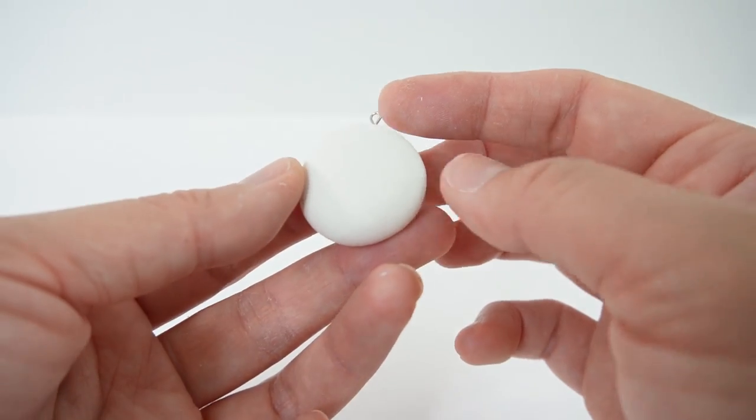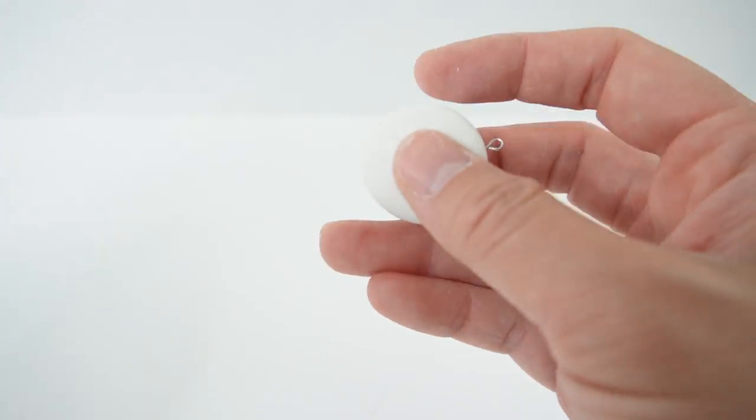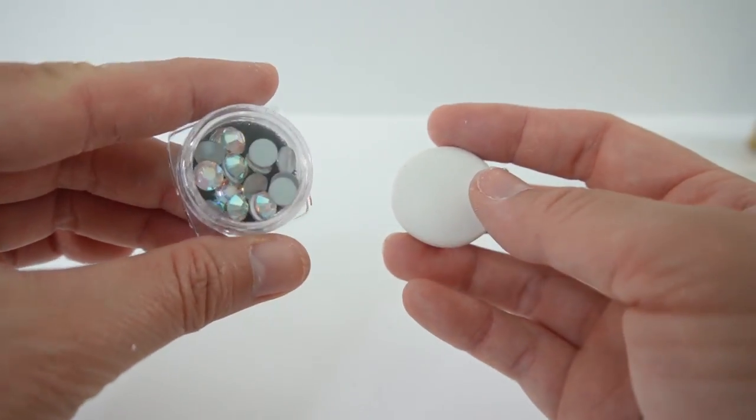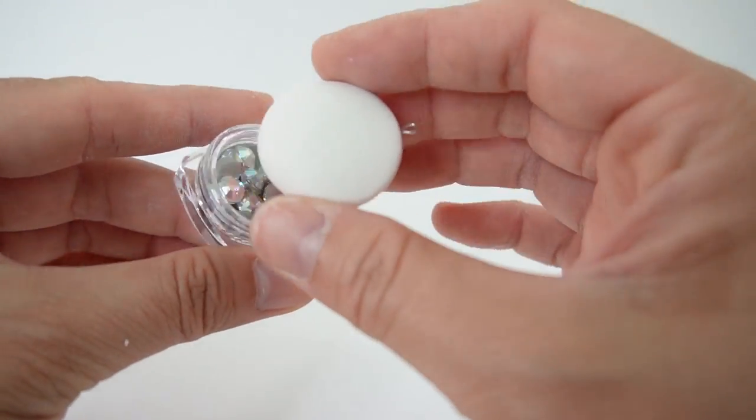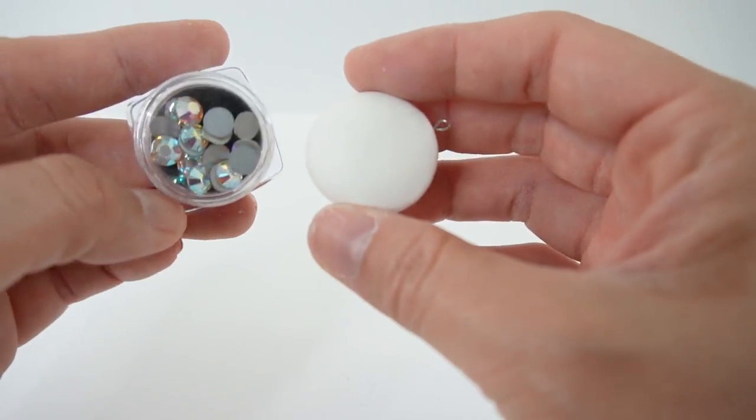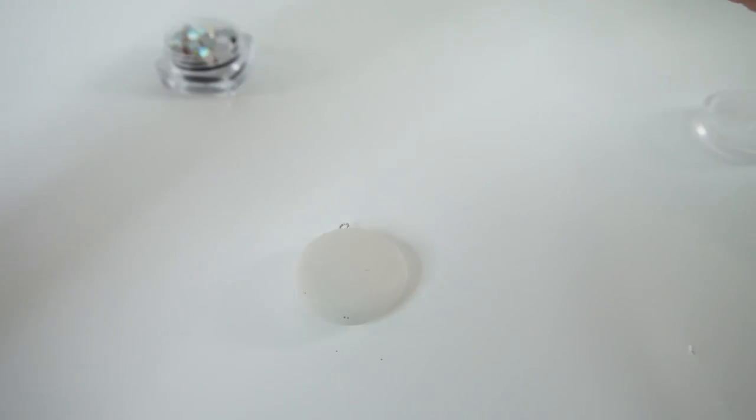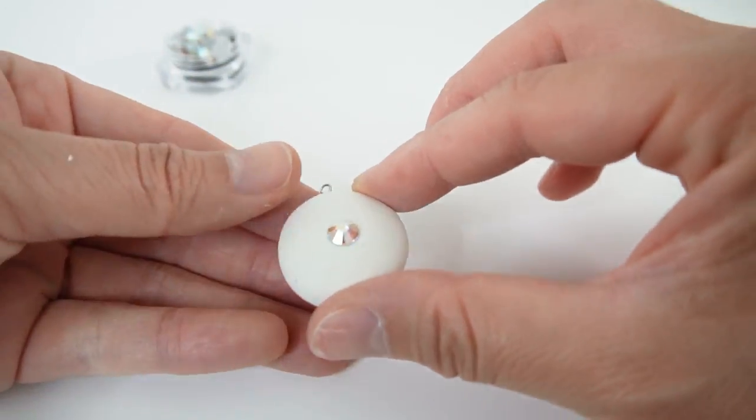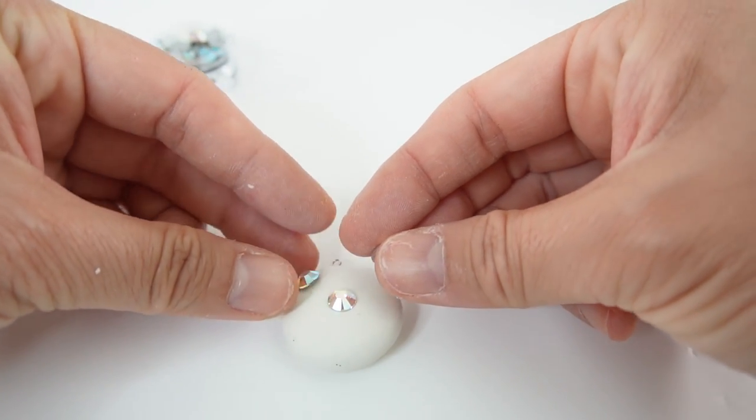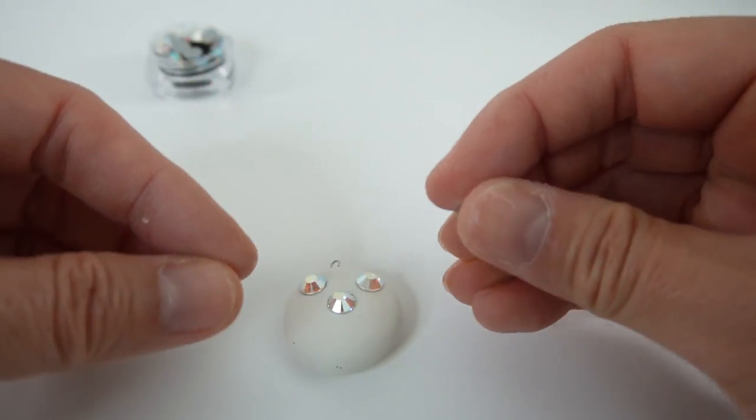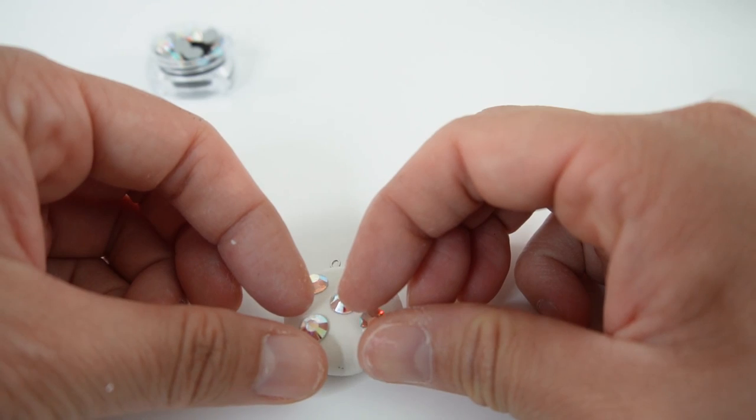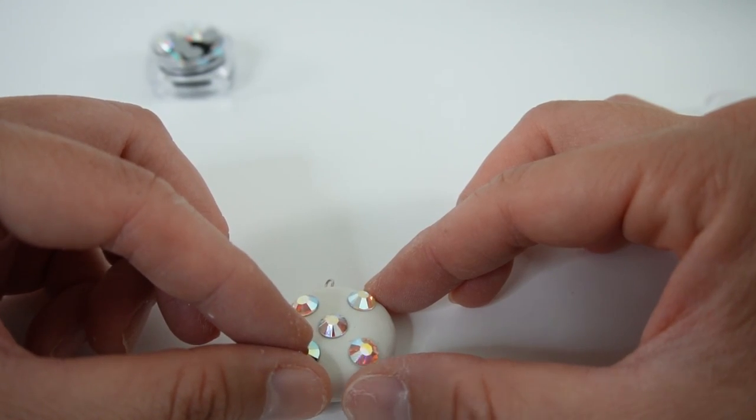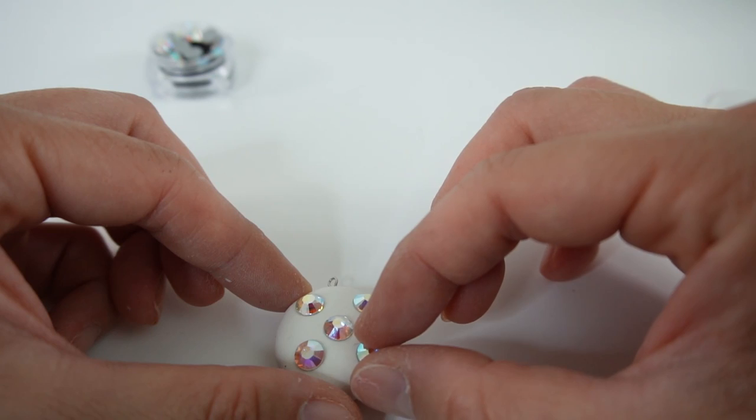So usually I would bake the charm right now. However, this time because we're going to be putting these gems on there, I'm going to put them on here temporarily just to mark the spots. So we're going to place one in the middle and four on the side. And I'm going to adjust it a little bit so that it looks right.